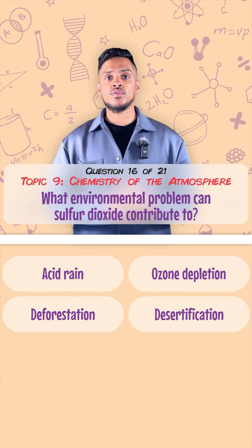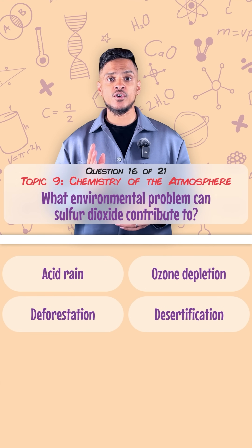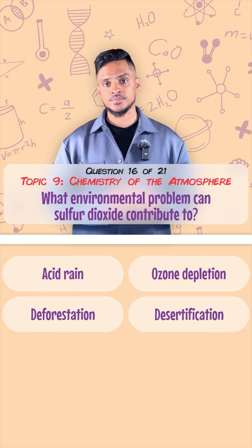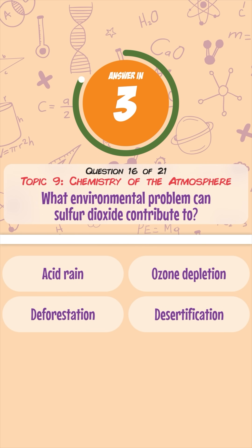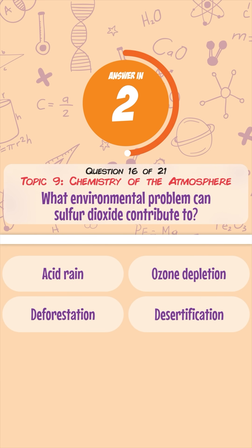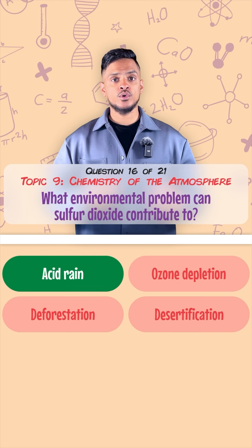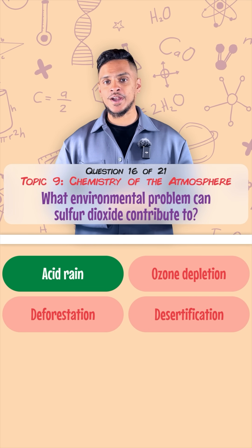What environmental problems can sulphur dioxide contribute to? It causes acid rain.